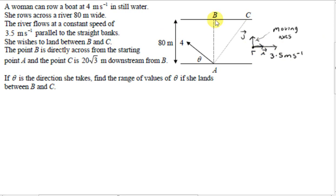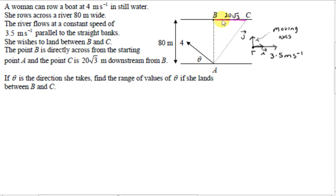She wishes to land between points B and C. B is a point directly across from the starting point A, and C is 20 root 3 meters downstream from point B. If theta is the direction she takes, find a range of values of theta for her to land between B and C — anywhere along this colored line here.